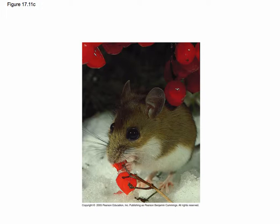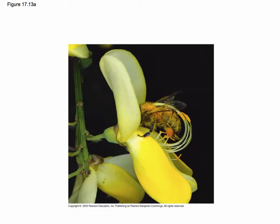Here are some adaptations for pollination. Here's an orchid along with a bee collecting nectar from the orchid. You can see the anthers reaching around and dusting the bee, and here's the stigma that's going to pick up pollen from the bee.